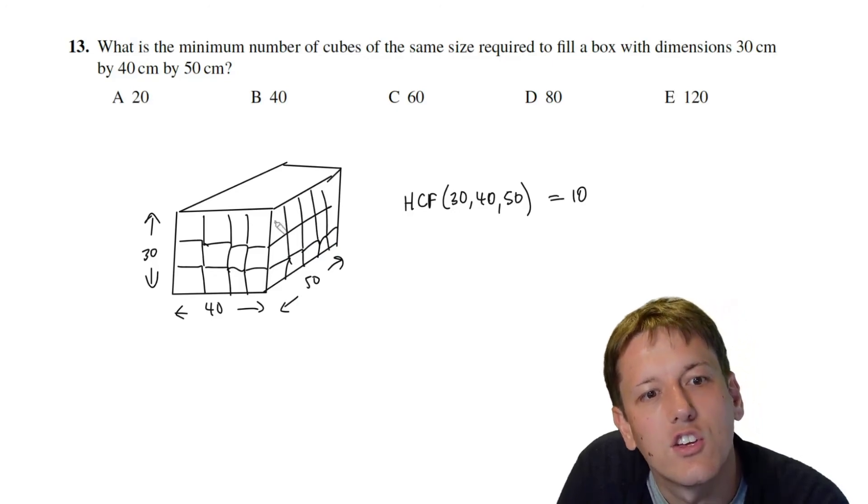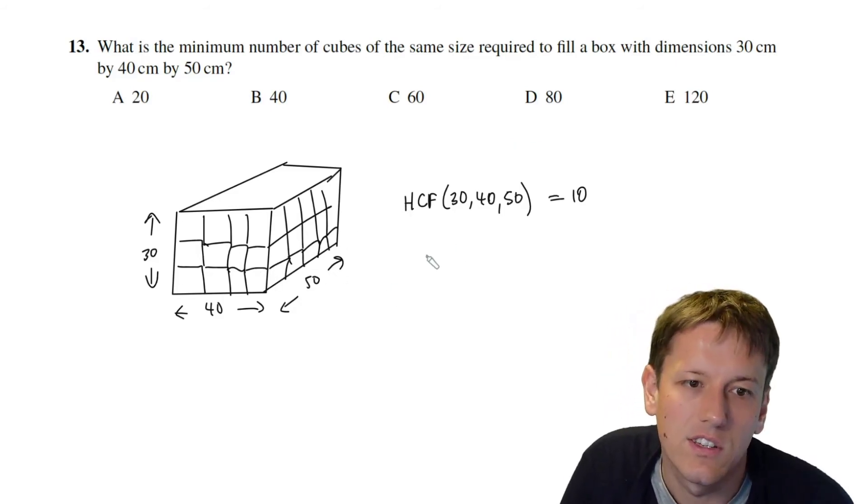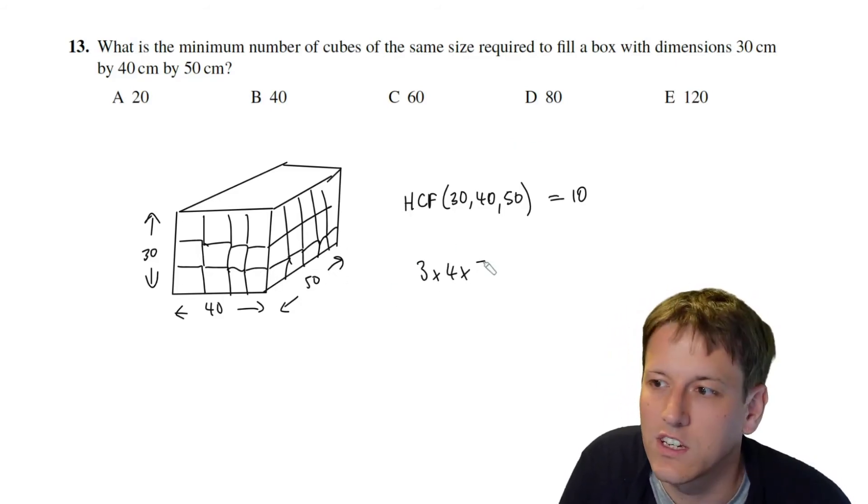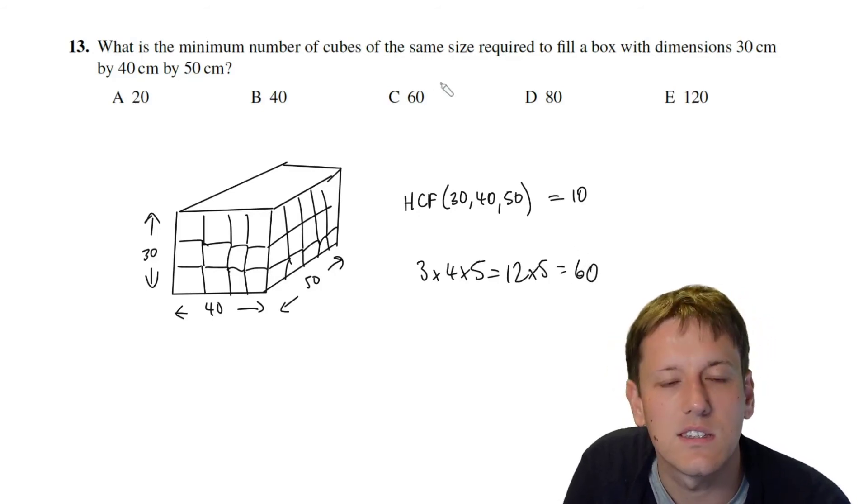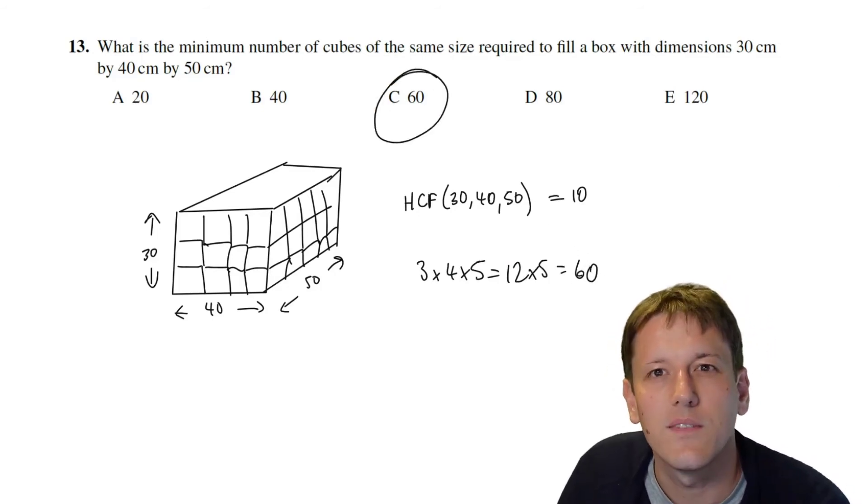So that's exactly what we're going to do here and then we can think about how many cubes that will be in this diagram and there'll be 3 high, 4 across and 5 in this direction so the number of cubes here will just be 3 times 4 times 5, 12 times 5 which is 60 and so the answer here is C.